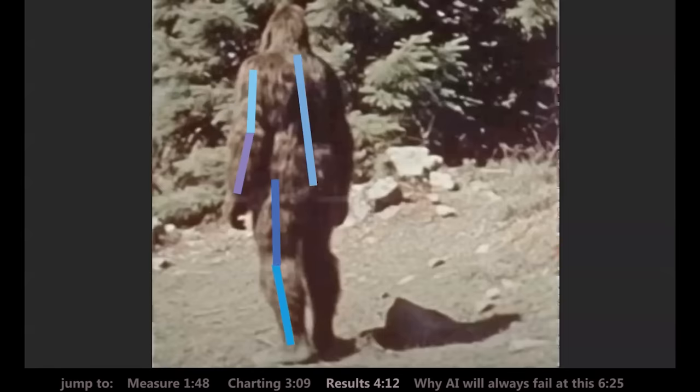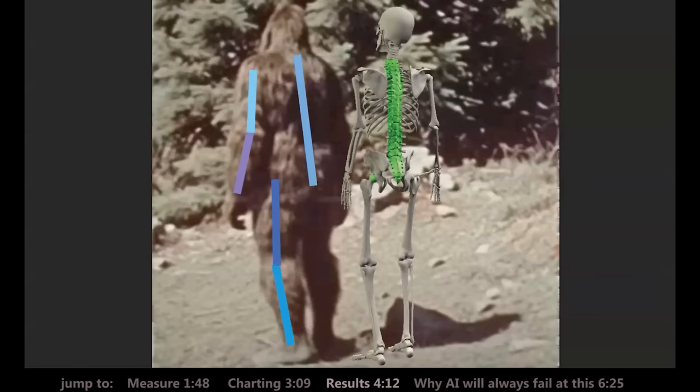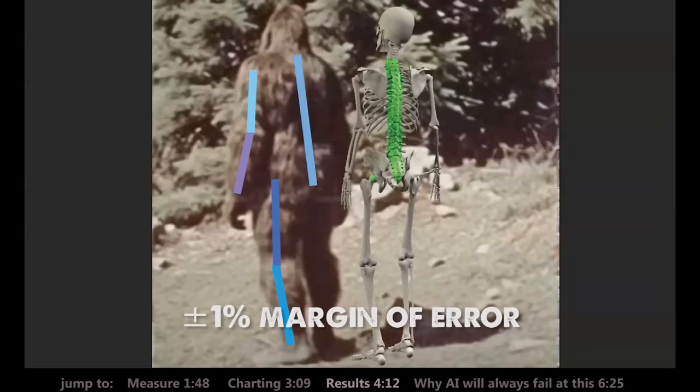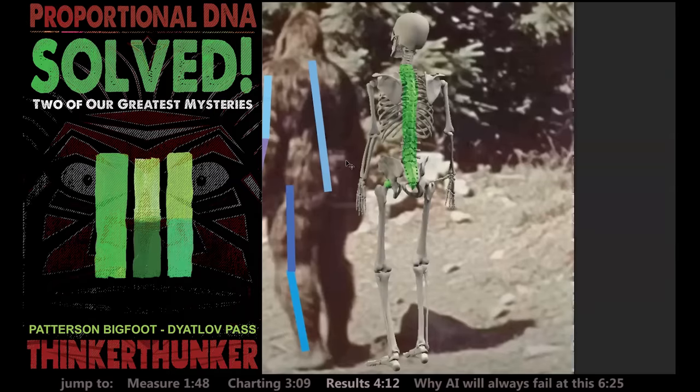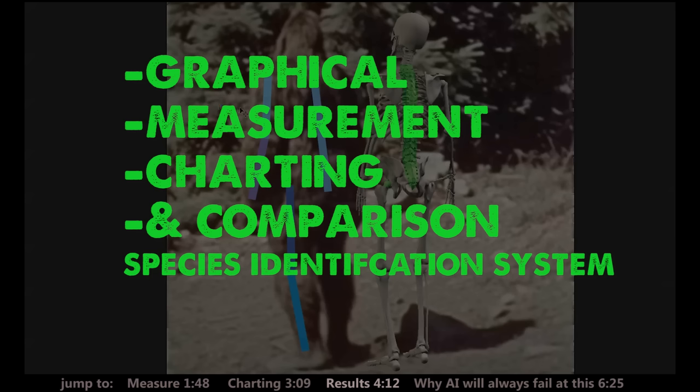There we go, there are our five main measurements and I've posed a skeleton so we could see where everything lines up. I would say plus or minus one percent margin of error. We see the hip socket right there which lines up, and the tip of the tailbone up to the base of the neck. For those who've read my new book Solved, you know that I call this system a graphical measurement charting and comparison species identification system, which is a mouthful, so I give it a nickname - I call it proportional DNA or even shorter, P-DNA.